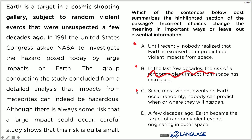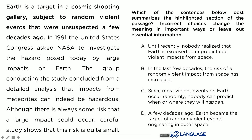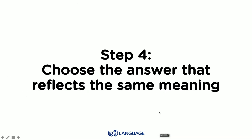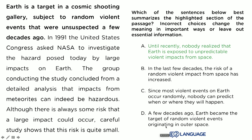Option C: 'Since most violent events on Earth occur randomly, nobody can predict when or where they will happen.' Definitely not. Option D: 'A few decades ago, Earth became the target of random violent events originating in outer space.' I'm stuck between A and D, but there is a big difference between these two. Step four: choose the answer that reflects the same meaning. It is, in fact, A.